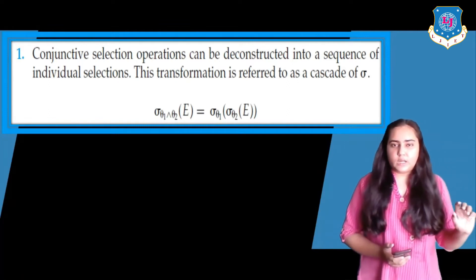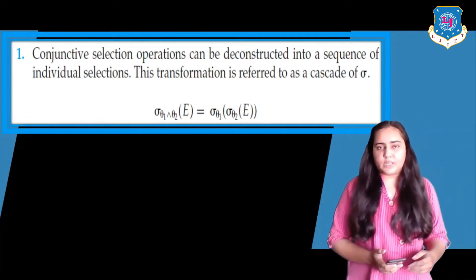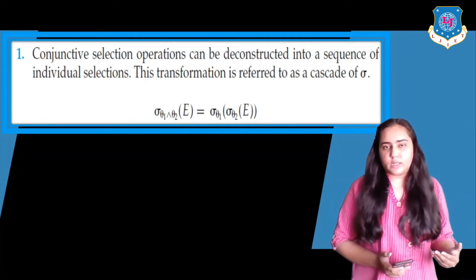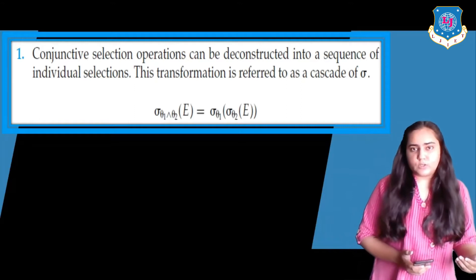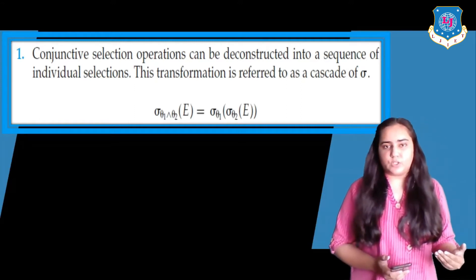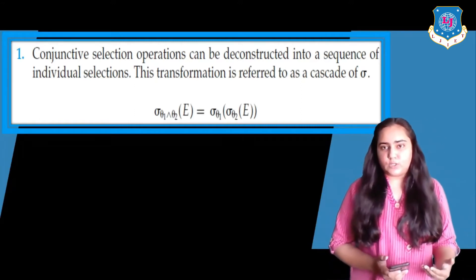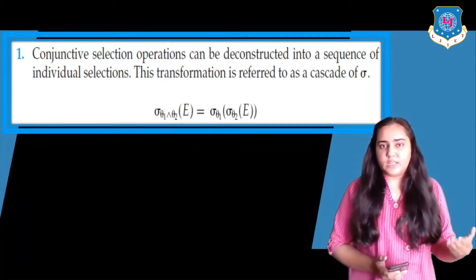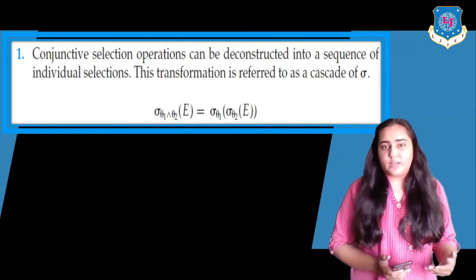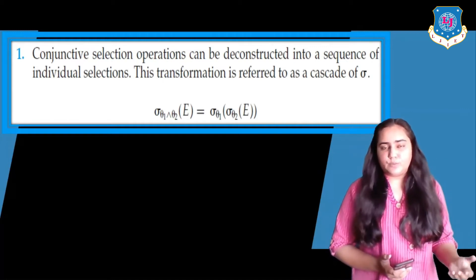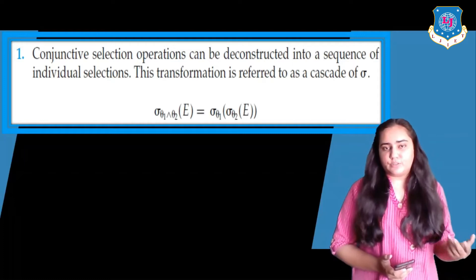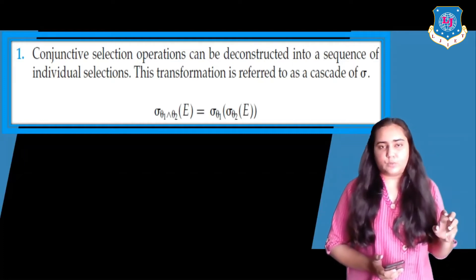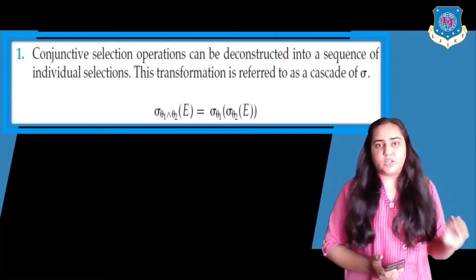In the example, E is a relation and the conditions mentioned outside are sigma conditions. You can see there is a sigma operation showing theta 1 and theta 2 as two different conditions. On the left side of the equal sign, theta 1 and theta 2 are two different conditions, and the 'and' operation in between is known as a conjunctive selection.